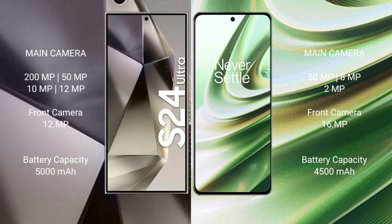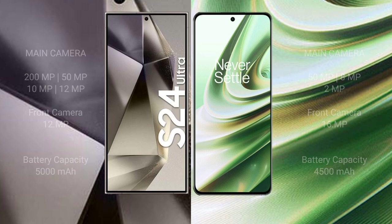Samsung Galaxy S24 Ultra has a 5000mAh battery with 45W fast charging support. OnePlus 10R has a 4500mAh battery with 150W fast charging support.